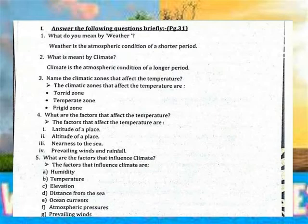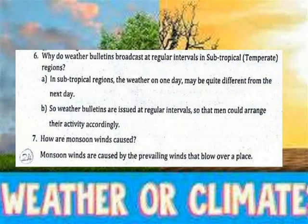What are the factors that affect climate? The factors that affect climate are: humidity, temperature, elevation, distance from the sea, ocean currents, atmospheric pressure, and prevailing winds. Why are weather bulletins issued at regular intervals in subtropical and temperate regions? In subtropical regions, the weather on one day may be quite different from the next day. So weather bulletins are issued at regular intervals so that people can plan their activities accordingly.